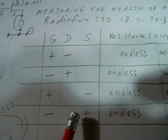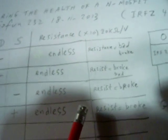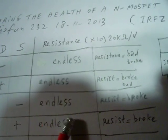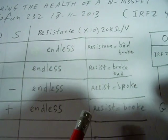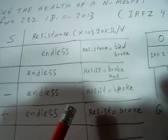Positive to the gate, negative to the source, endless resistance. And when you don't find an endless resistance, you can almost be sure that your MOSFET is dead.